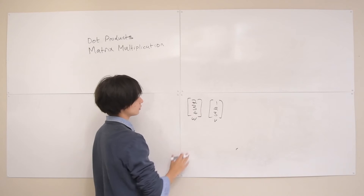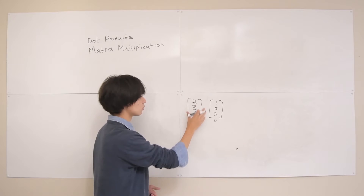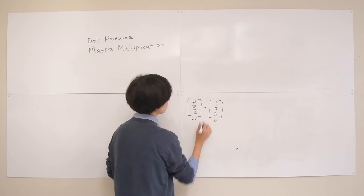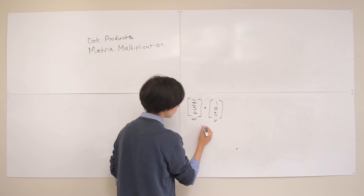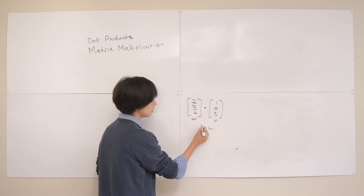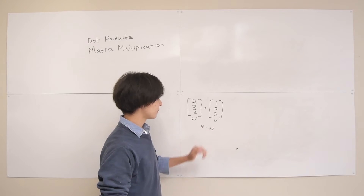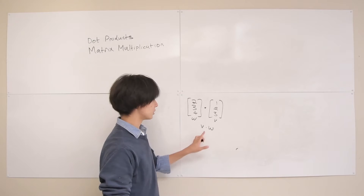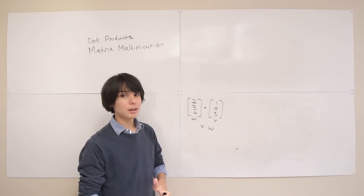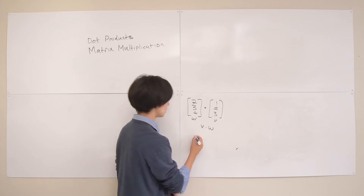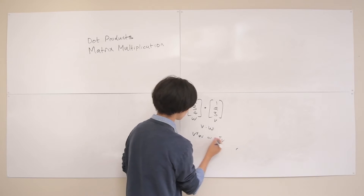If we write out the vectors in full form like this, we can just put a dot in between them. If you're lazy you can write v dot w, but you need to make sure the readers know that v and w are vectors, because otherwise this just looks like scalar multiplication. The most recommended way to show dot products between two vectors is v-transpose w, or w-transpose v — it doesn't really matter which order you go in.